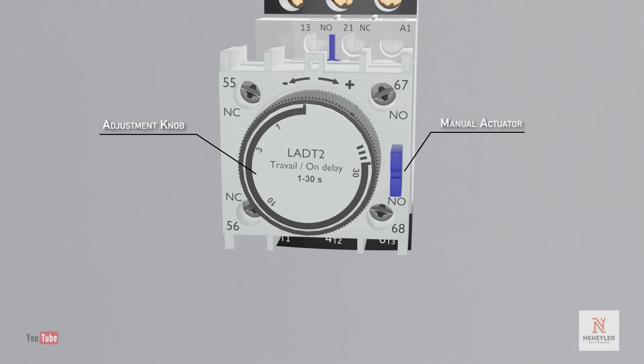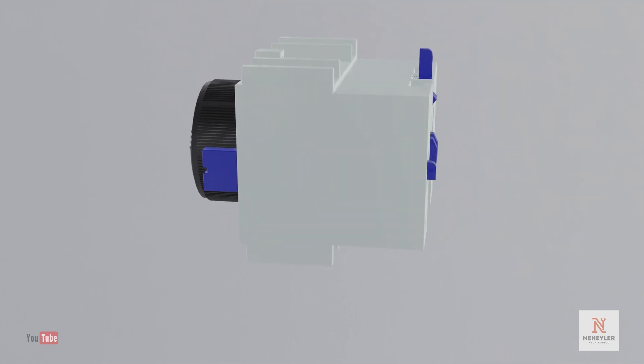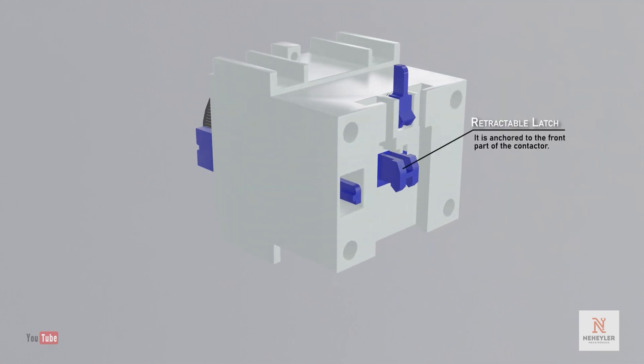It also consists of an actuator which, if pressed, allows us to perform the timing test manually. On the back, it consists of a retractable latch which is anchored to a contactor for operation.